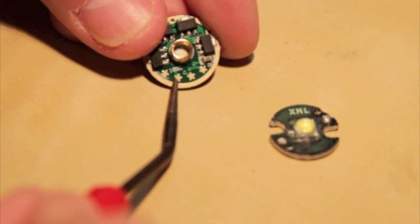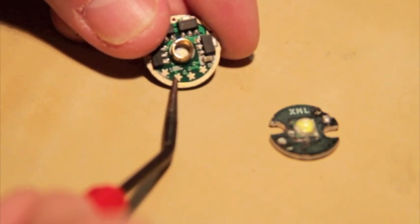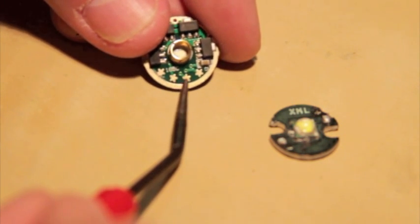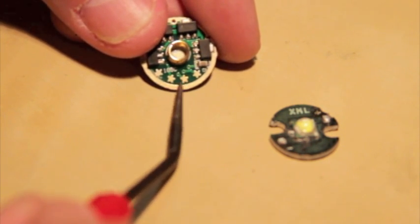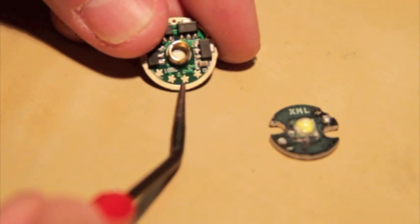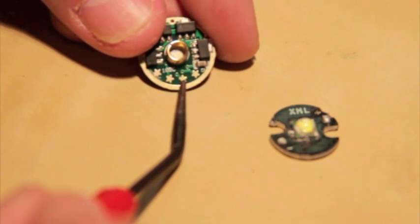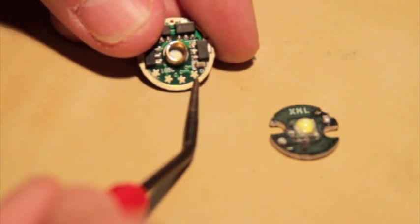The second star right here represents only low, high, and strobe. The third star here from the left is going to give you low, mid, and high. And the fourth star from the left is going to give you low and high.